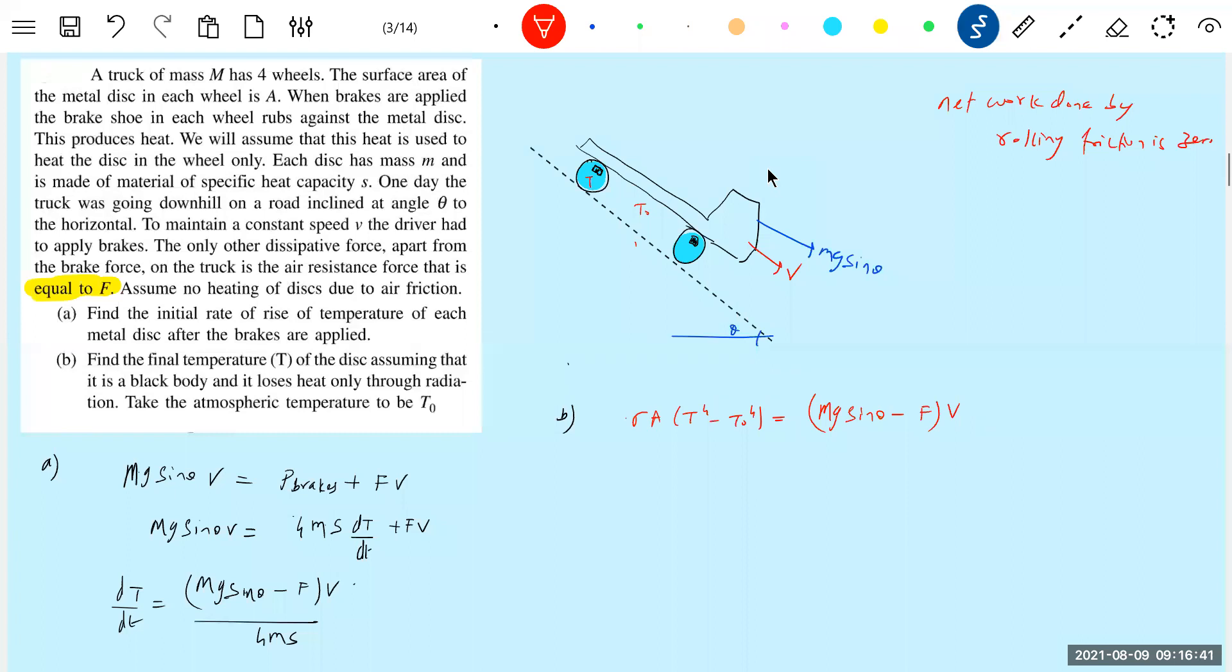We have to solve for this T. Here, here you should not bring capital M. I think this was the mistake what we do. Who is going to dissipate the power? Only the metal disc which are there here.